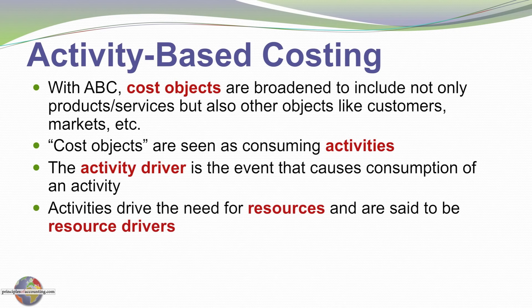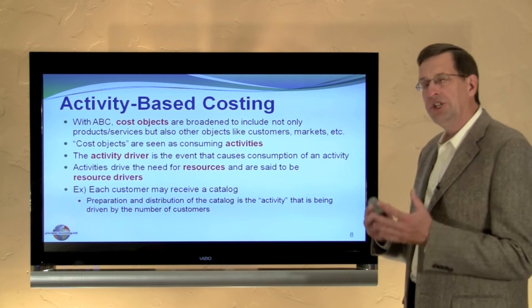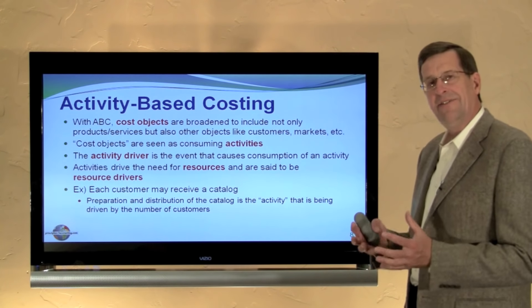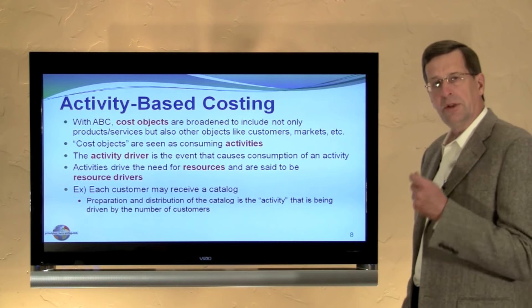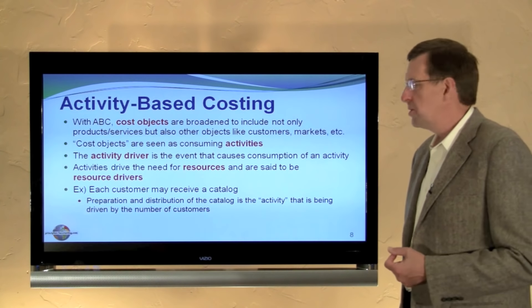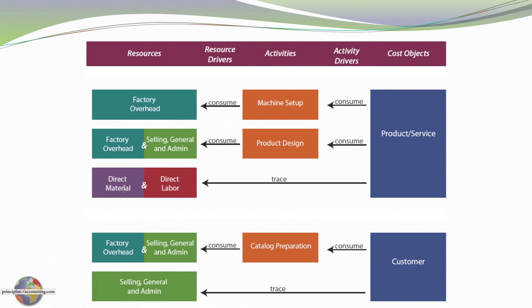Activities drive the need for resources and are thus said to be resource drivers. For example, each customer may receive a catalog. Preparation and distribution of the catalog is the activity being driven by the number of customers. So customers are our cost object, and the activity is the preparation and distribution of the catalog to those customers. Here is a representation of our cost pool on the left — our resources, in other words factory overhead, selling and administrative costs, material, and labor — and our cost objects on the right, whether it's a product, a service, a customer, or any number of other items. The products and services are consuming certain activities such as machine setup, product design, and so forth, and those activities are consuming our resources.